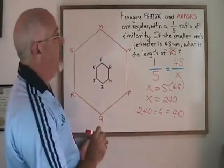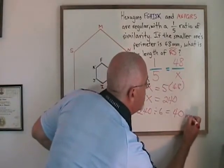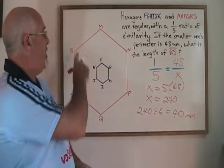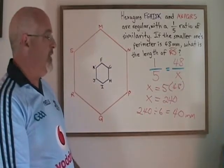And because we started with millimeters, we have our answer in millimeters. The length of side RS in the larger orange hexagon is 40 millimeters.